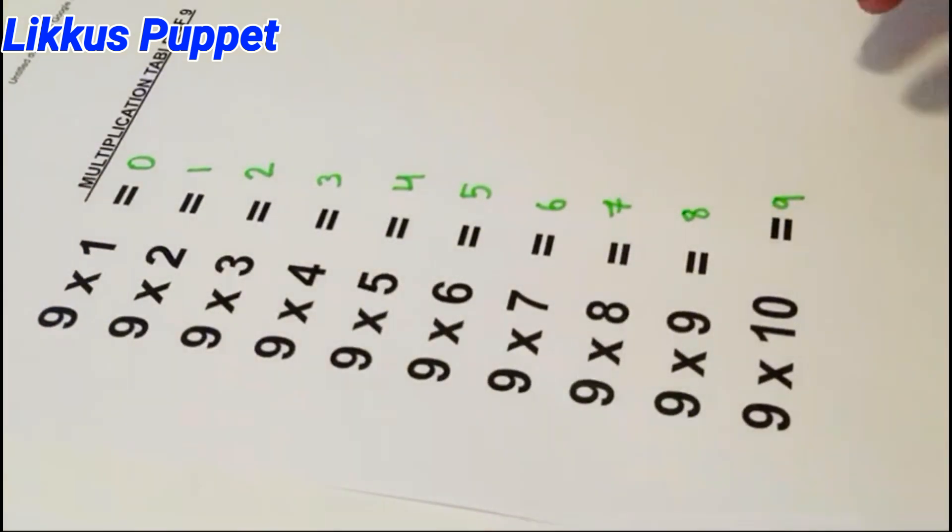So now we wrote all the numbers from 0 to 9. Now we're going to do the same thing, but we're going to do it in this way.